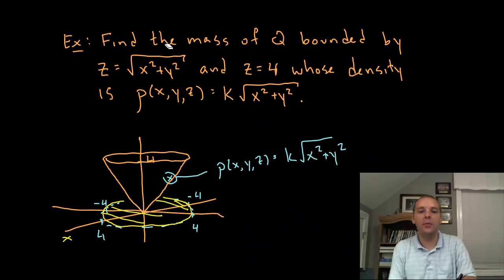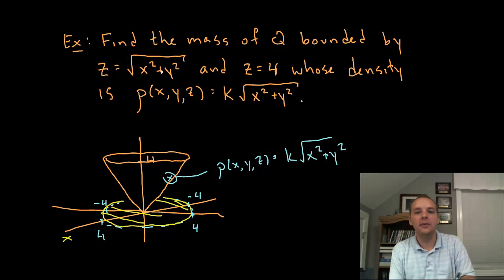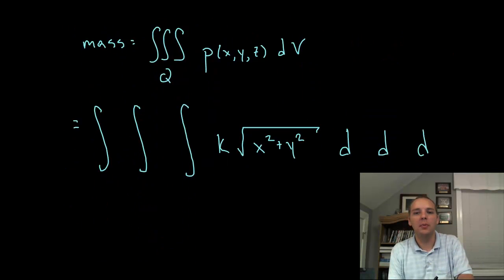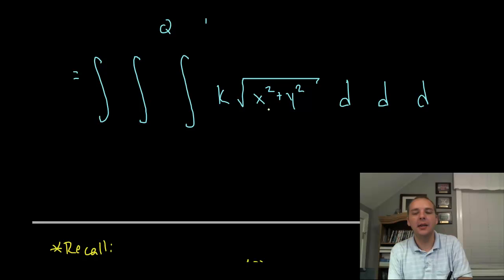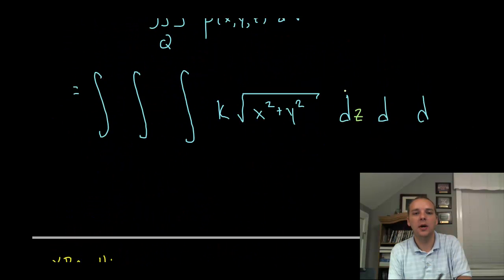One thing that catches my eye right off the bat is because they gave us z values from blank to blank, you know a lower z value and an upper z value. That would make a pretty nice bound between these two curves. And since this bound here the lower bound has x's and y's as so many variables, we'll probably want to put that on the innermost limit of integration. So we'll go the lower limit is that cone, that square root x squared plus y squared.